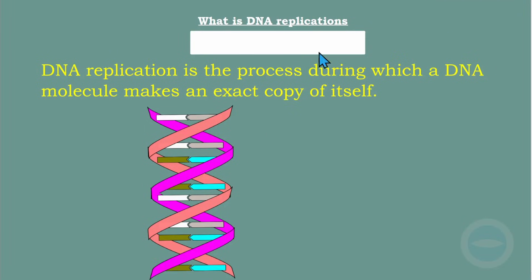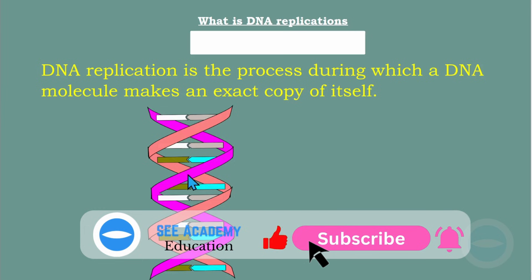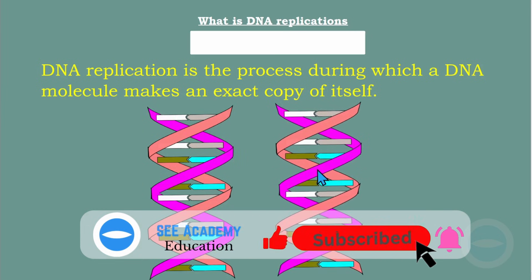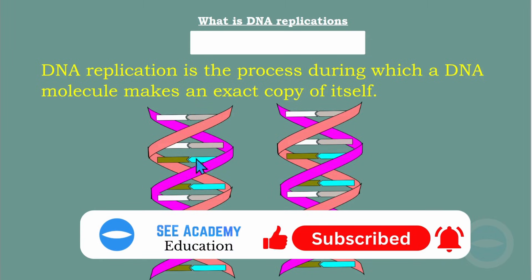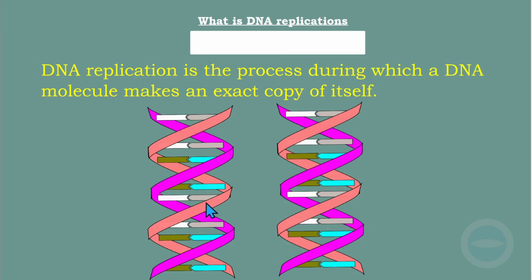The first question: what is DNA replication? DNA replication is the process during which a DNA molecule makes an exact copy of itself. So if you have this molecule here, when it produces an exact copy of itself, you had one and now you have two. This is DNA replication — it's the same molecule, a copy of itself.